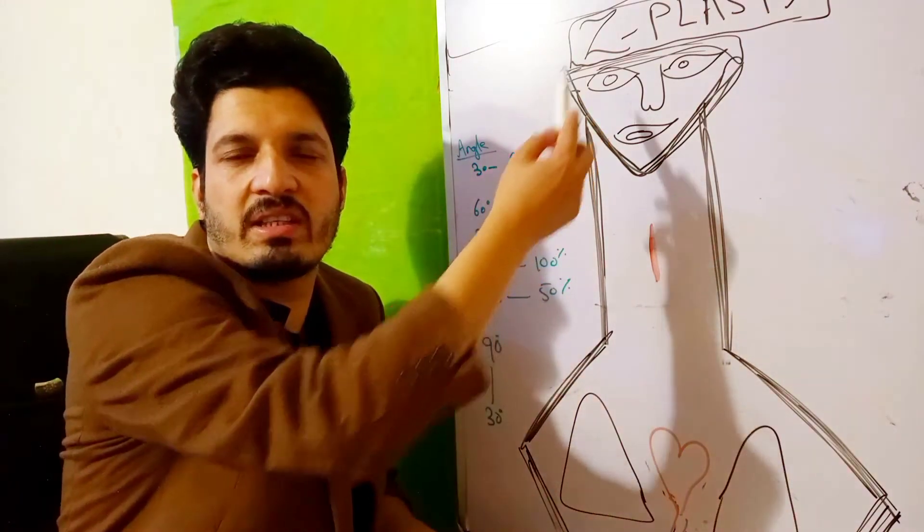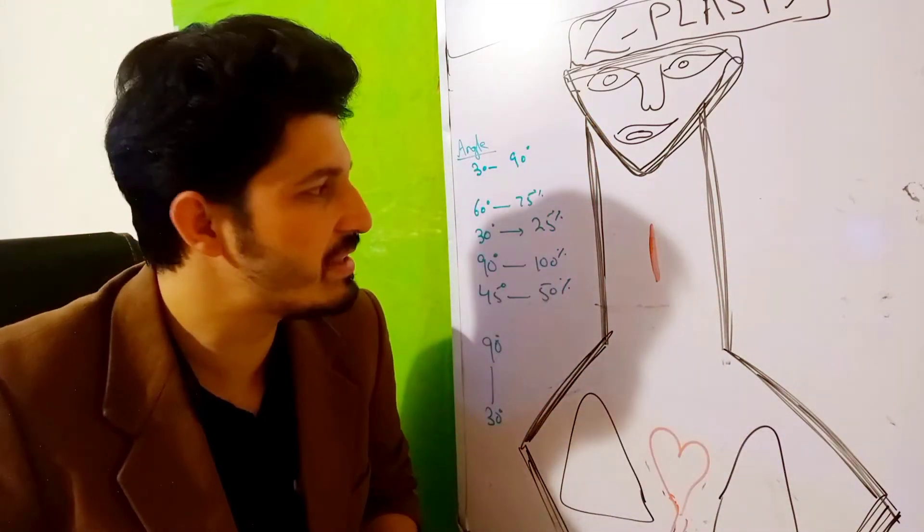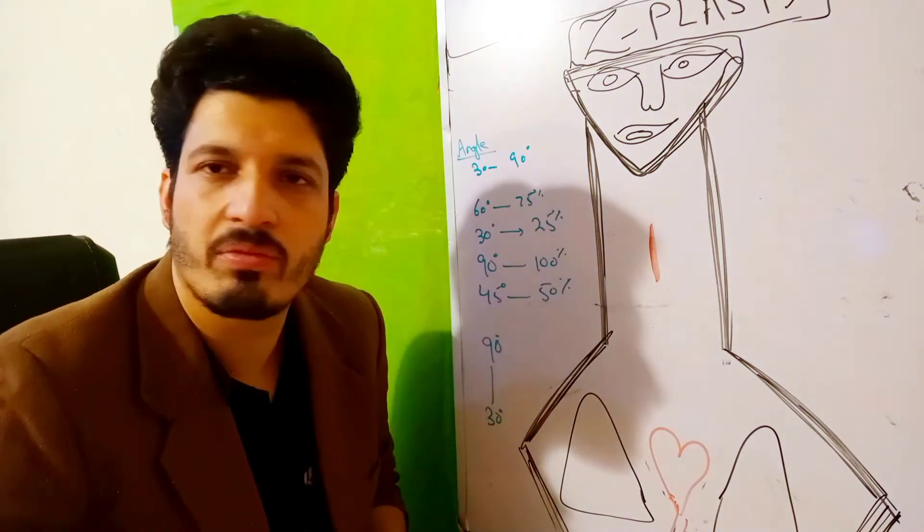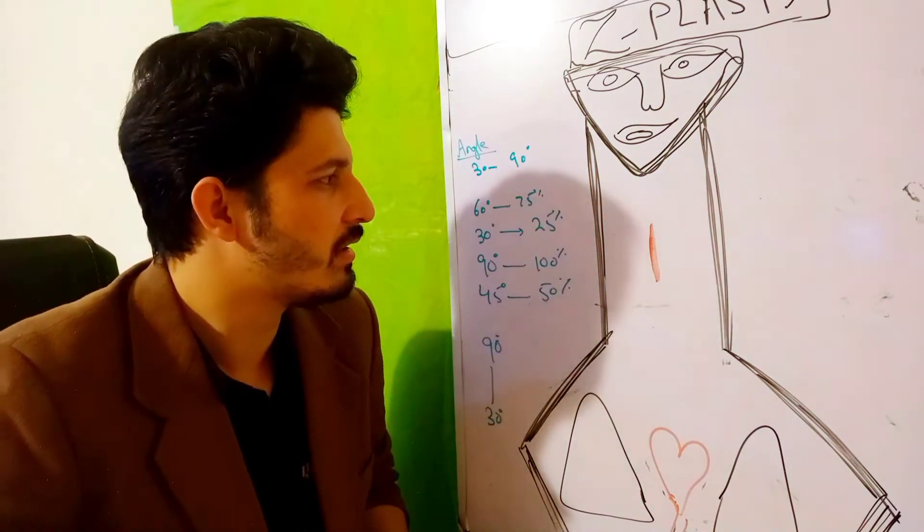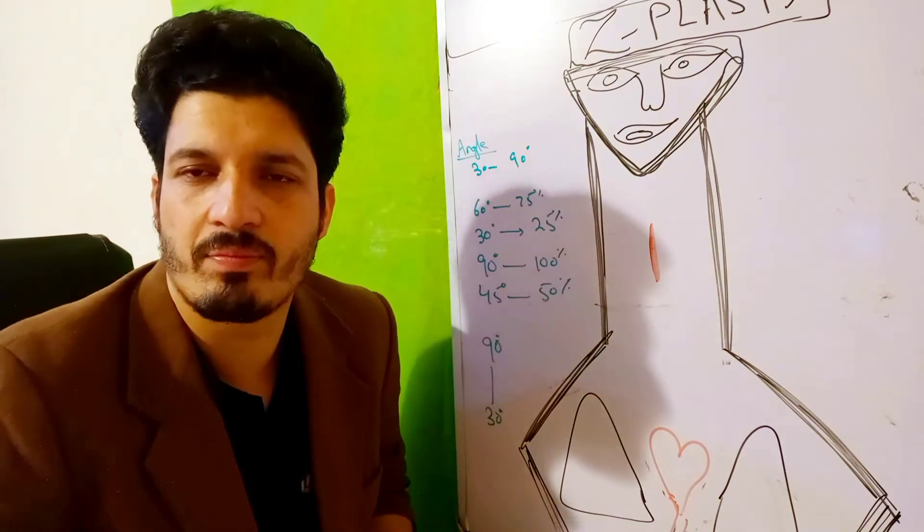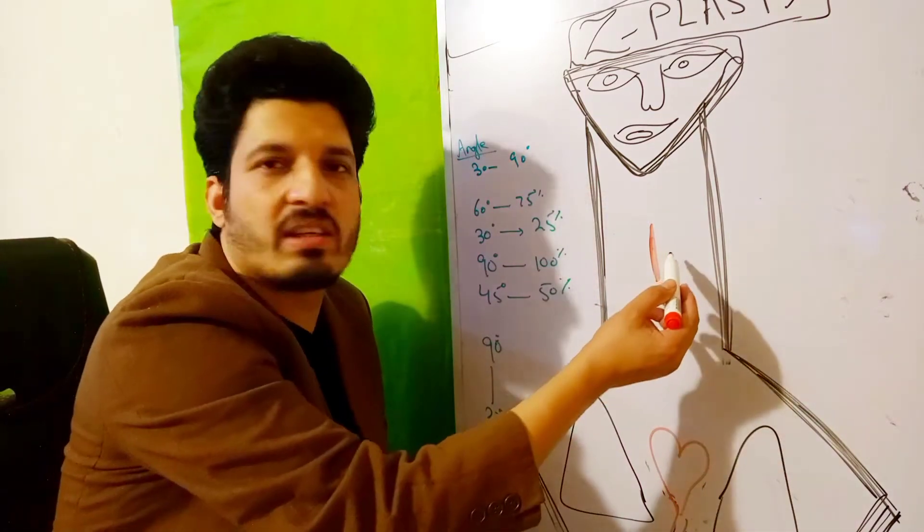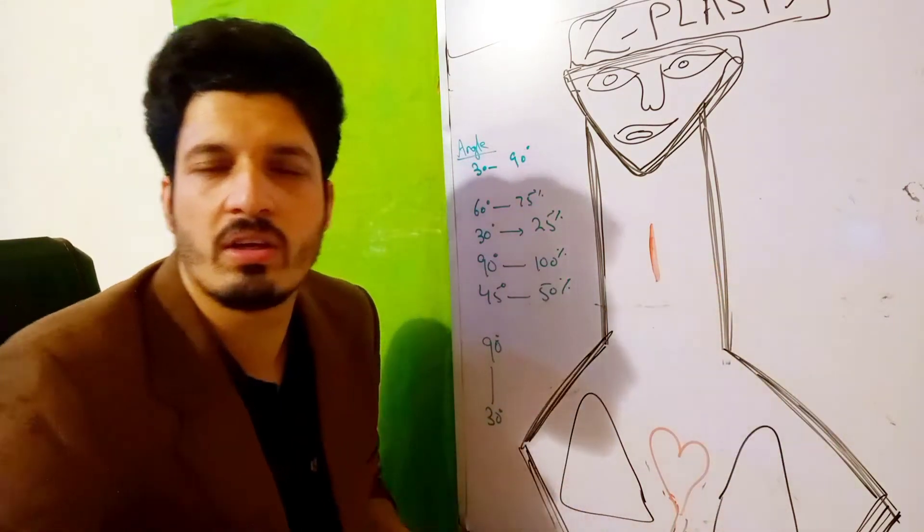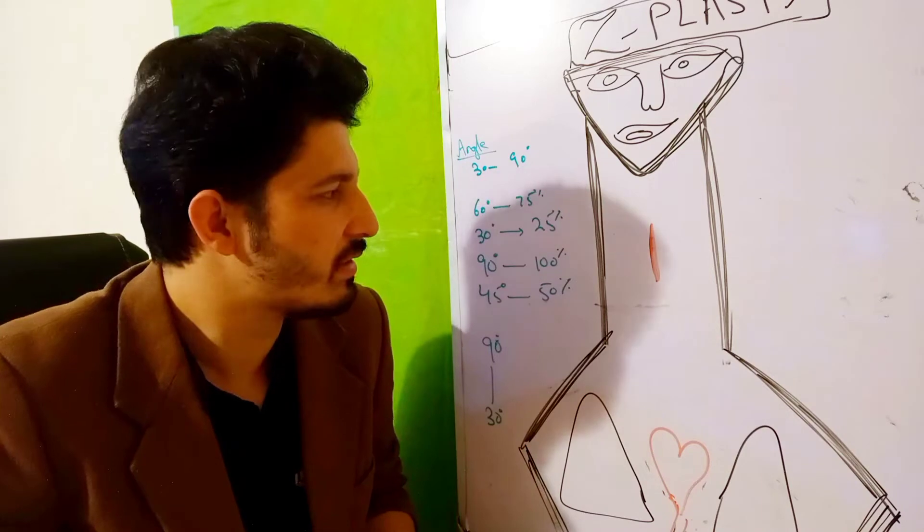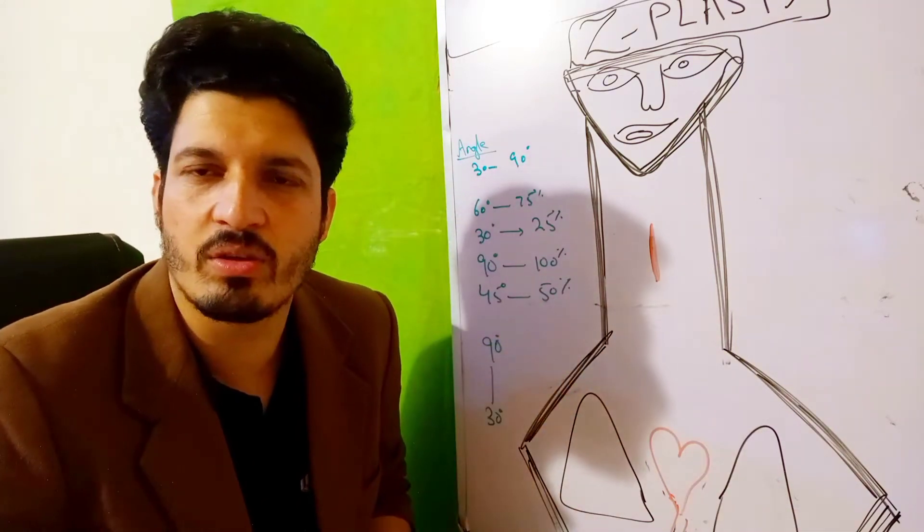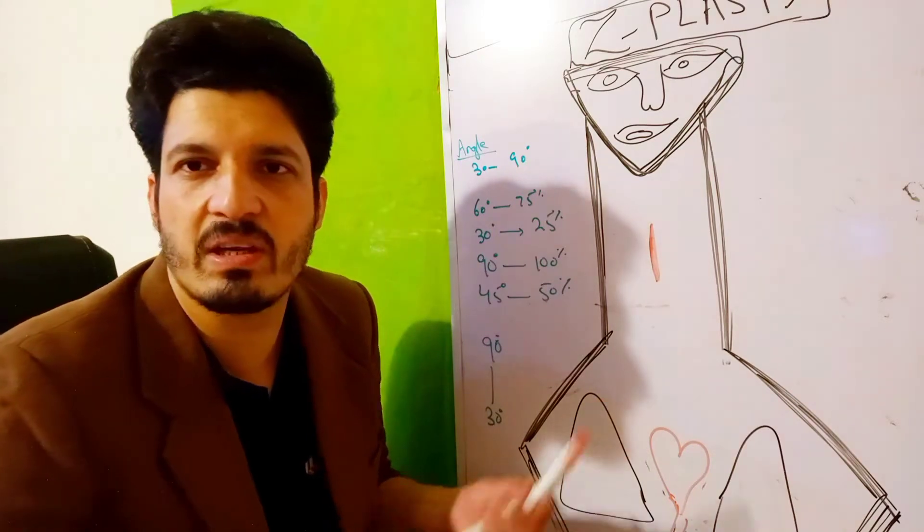In this case, we have opted for Z-plasty. Why Z-plasty? There are two to three principles. First, it should be a linear scar. Second, there should be extra skin available in the surrounding area. These two principles are totally applicable at this part, and we will do Z-plasty in this case.